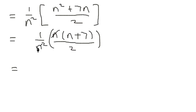So we can cancel one of these n's out. So we're just left with 1n down here in the bottom. I should just write an n here. So we end up with n plus 7 over 2n.